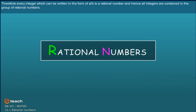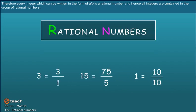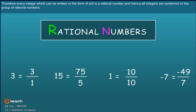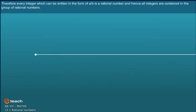Therefore, every integer which can be written in the form of a by b is a rational number. And hence, all integers are contained in the group of rational numbers.